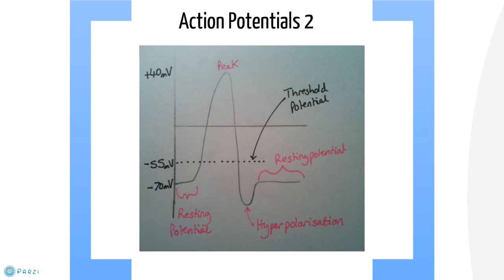When the nerve fires, the axon rapidly depolarises and its membrane potential rises to plus 40 millivolts. This happens because the sodium-potassium pumps stop and sodium channels in the membrane open, allowing sodium to enter the axon. If the stimulus does not cause the membrane voltage to rise over the threshold value of minus 55 millivolts, the action potential will not be conducted. This is the all-or-nothing principle.